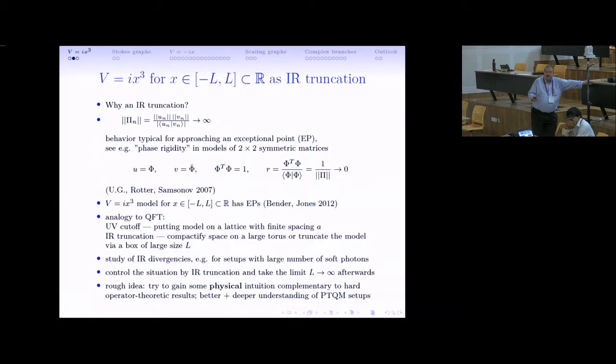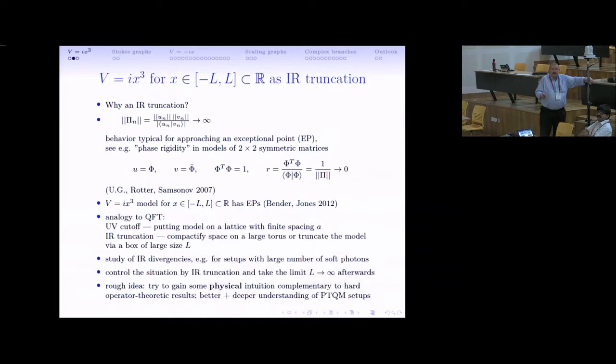From the paper of Carl Bender and Hugh Jones from 2012 on the iX³ model over an interval, it was clear that these models have a countable set of exceptional points. Why not use the analogy to quantum field theory? In QFT, to handle singularities, one can use an ultraviolet cutoff by putting the model on a lattice with finite lattice spacing a, or if one has additional infrared singularities, use an infrared truncation—compactify the space on a large torus or put the model in a box of large size L. We will use the second method here.